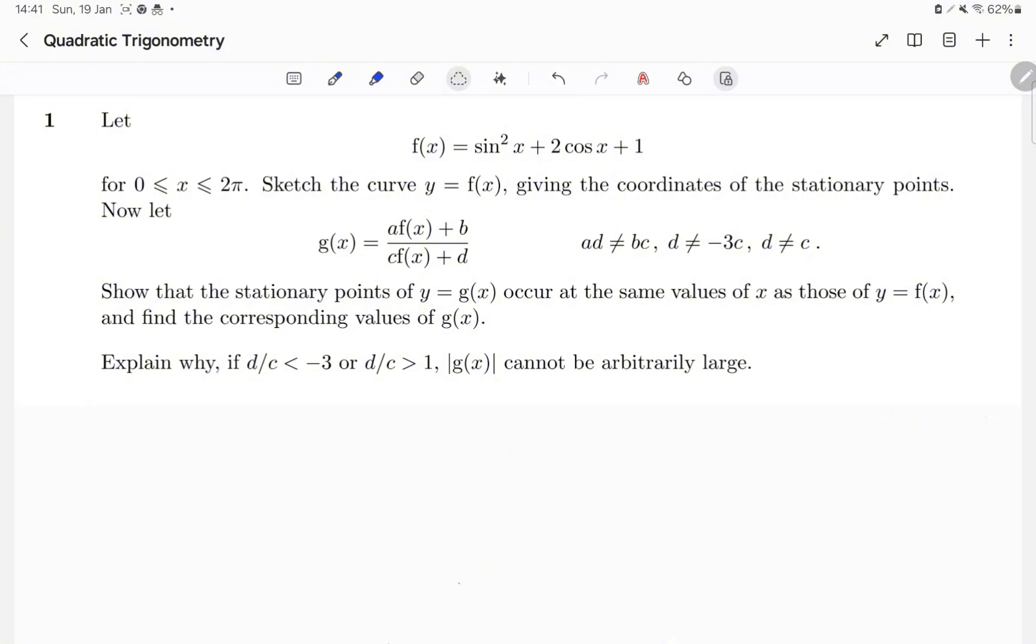Part 1. Let f of x equal sine squared of x plus 2 cosine x plus 1. For 0 less than or equal to x less than or equal to 2 pi, sketch the curve y equals f of x, giving the coordinates of the stationary points.